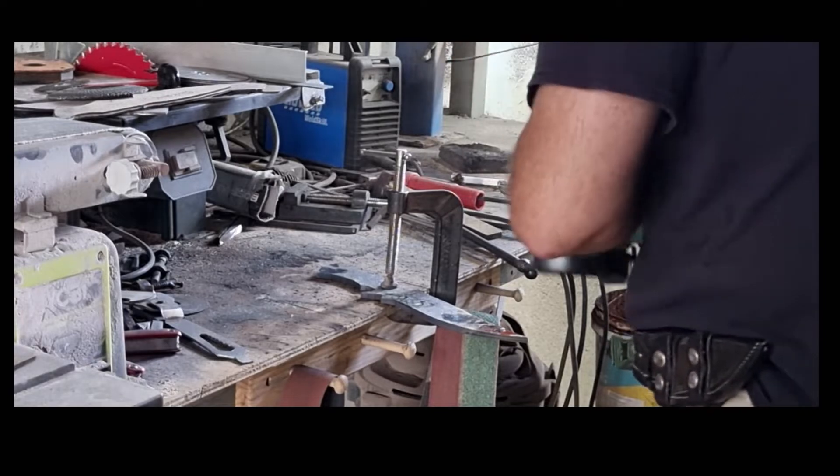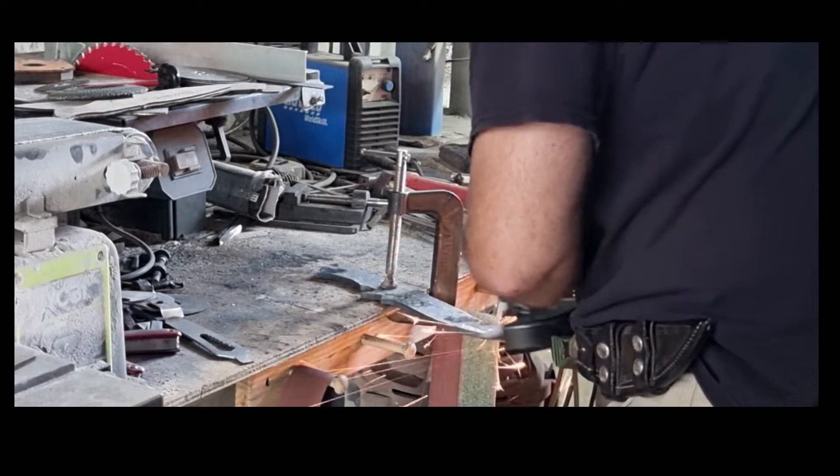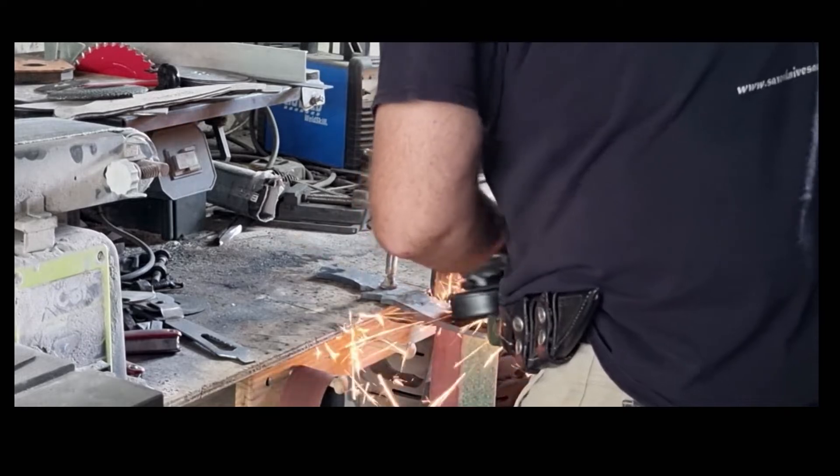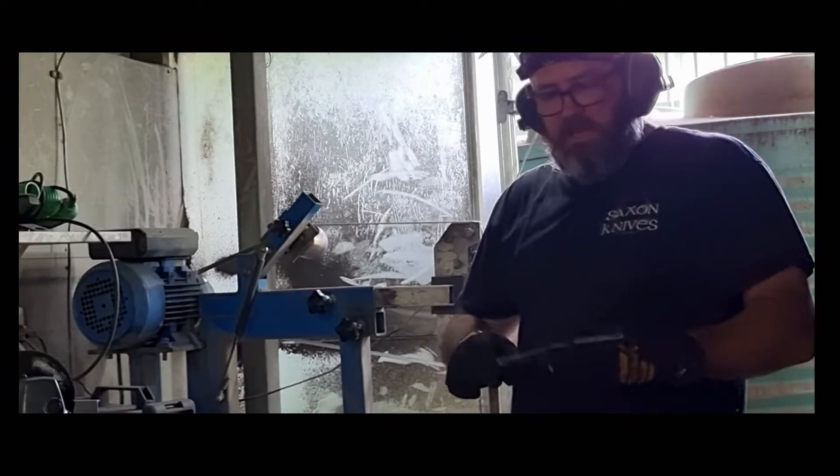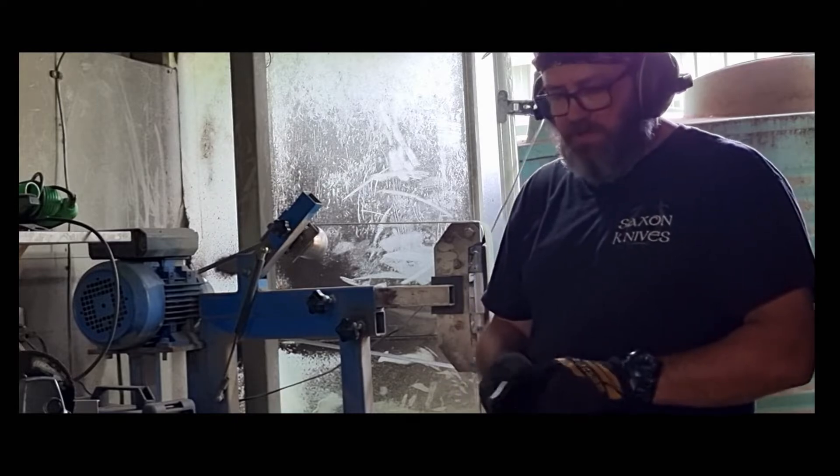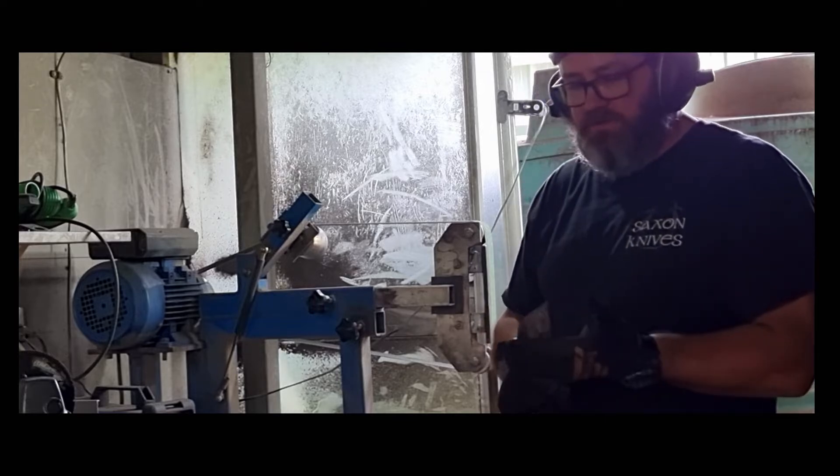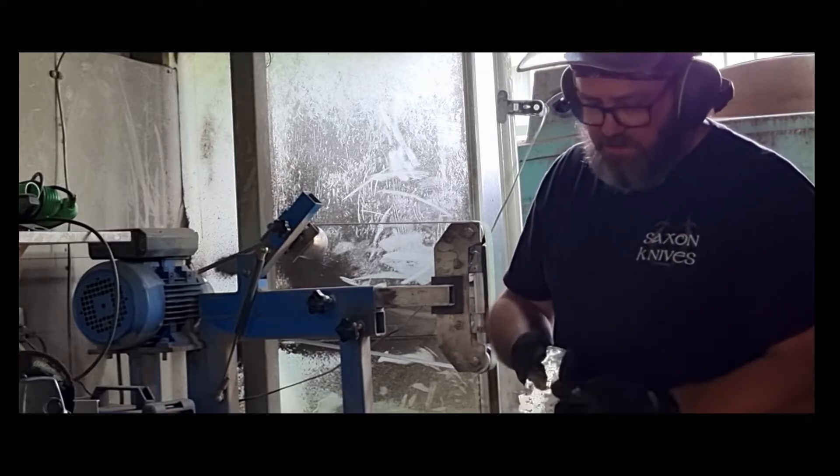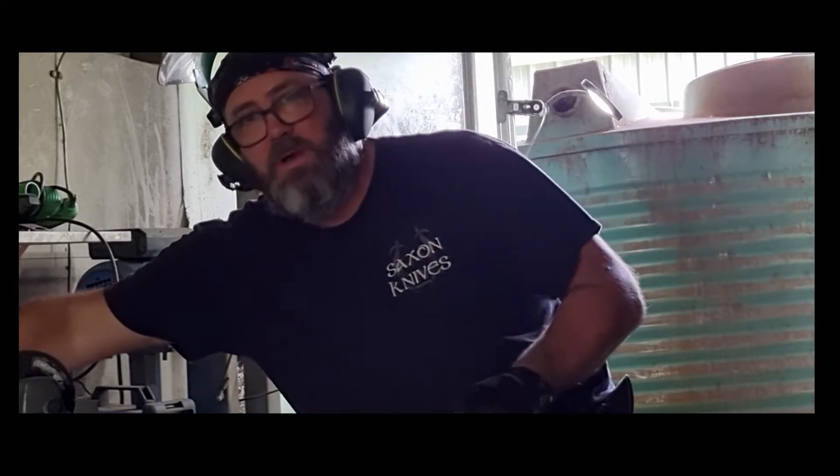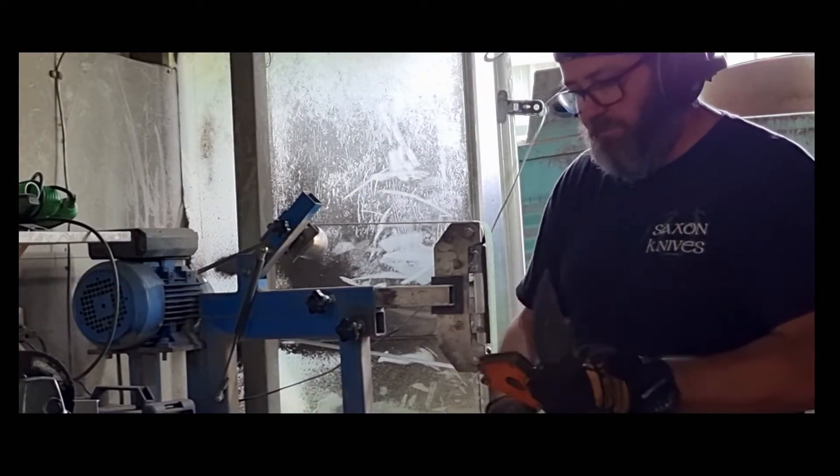Okay, so currently we've got about 7.4 millimeters here at the ricasso area, about 6.7 millimeters down at the tip. So we're going to now surface grind that, get all these little divots and hammer dings out and flatten it all out. And by the time we're done with that, we should be at about the size and thickness that we want for our finished blade.